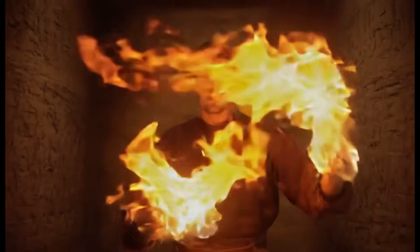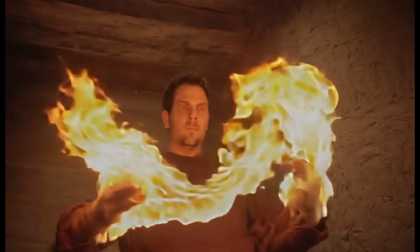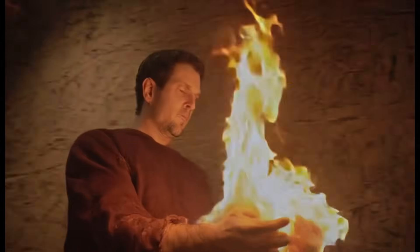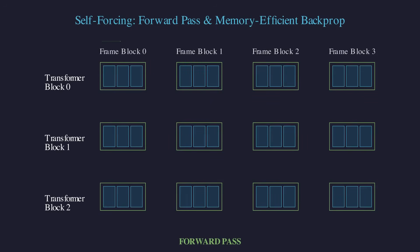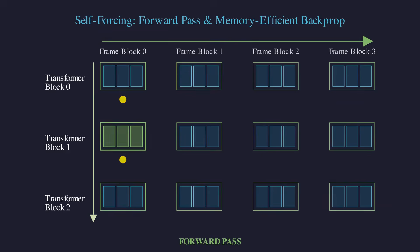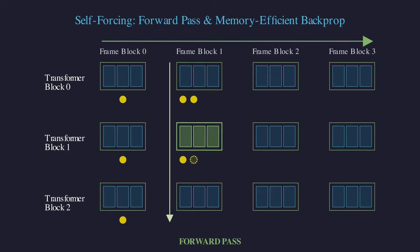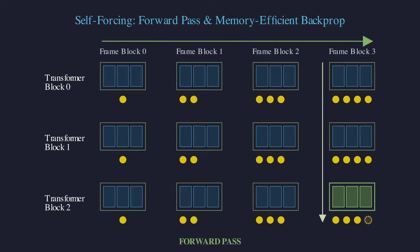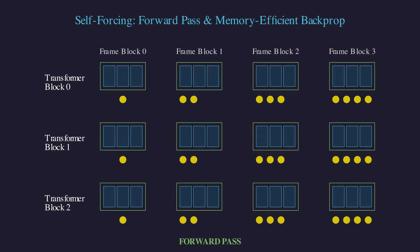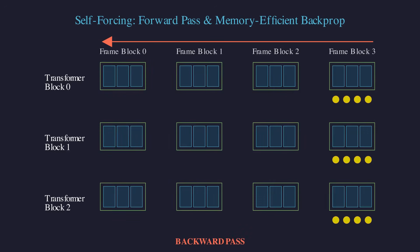Getting the model trained was only half the battle. Making it work for long-form generation required even more innovation. The team discovered that when you use a sliding window of frames, keeping only recent frames in memory, information from evicted frames leaks through the key-value cache — like a game of telephone where whispers from way back still influence what you're saying now, but in a corrupted way. Their solution was KV cache recomputation: instead of just evicting old frames, they recompute the cache for recent frames with a block-causal mask, breaking the receptive field and preventing error accumulation from frames that should no longer matter.